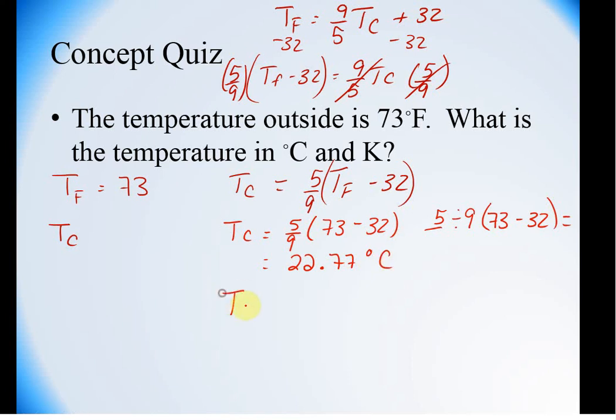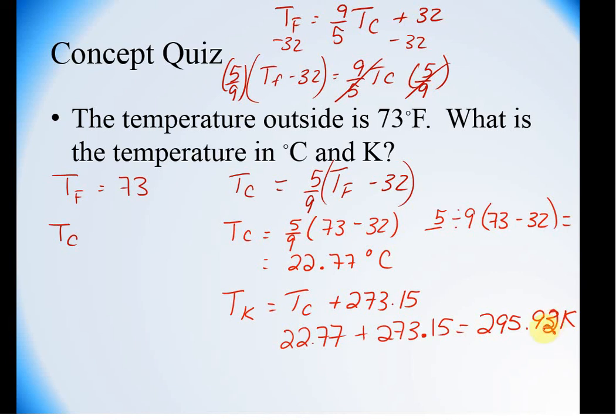Now, if you remember, the temperature in Kelvin is equal to the temperature in Celsius plus 273. So we are going to simply take that 22.77 and if you want you can have the .15 plus 273.15 is equal to 295.93 Kelvin. Now, or I guess if you rounded it would be 92.